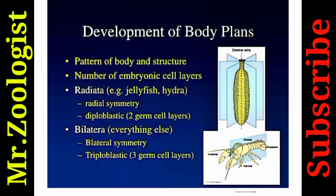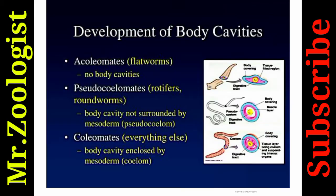Development of body cavities: Acoelomates such as flatworms have no body cavities at all — 'a' means without, 'coelom' means cavity. Pseudocoelomates have a false body cavity not surrounded by mesoderm — examples include rotifers and roundworms. Coelomates are all organisms excluded from acoelomates and pseudocoelomates; their body cavity is fully enclosed by mesoderm.